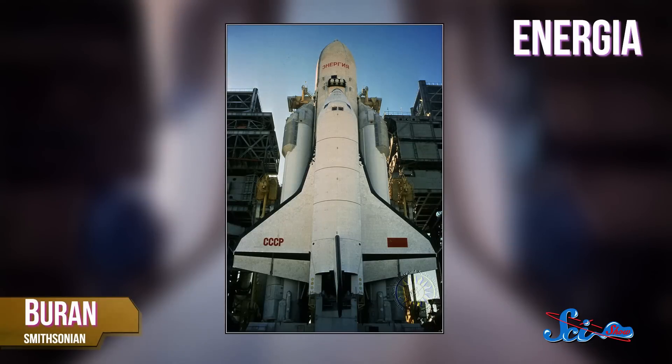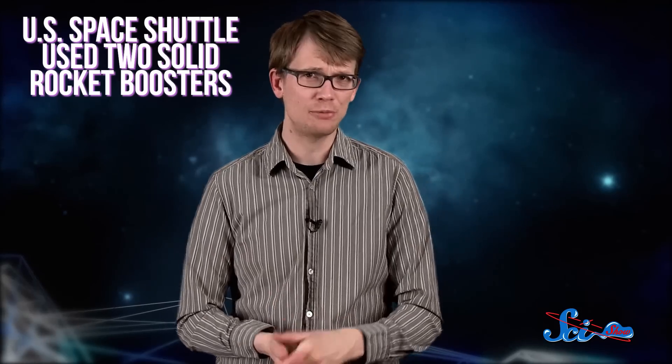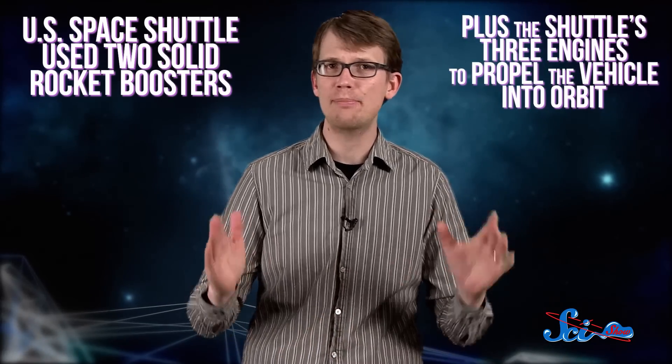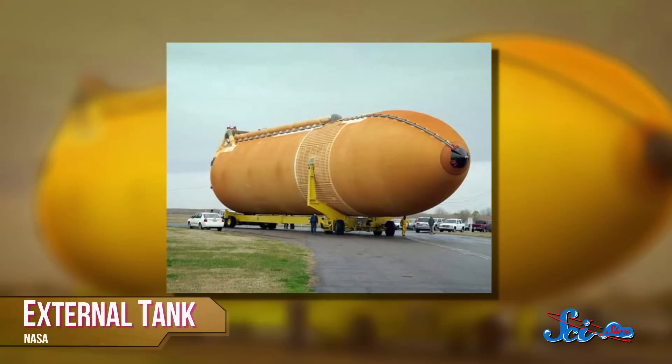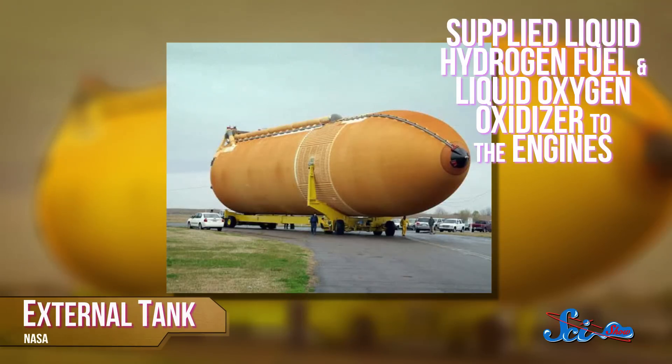But when it came to their new rocket system, called Energia, that's where we see some major changes. The U.S. Space Shuttle used two solid rocket boosters, plus the shuttle's three engines to propel the vehicle into orbit. That big tank in the middle, called the external tank, supplied liquid hydrogen fuel and liquid oxygen oxidizer to the engines.